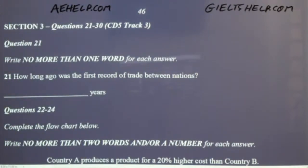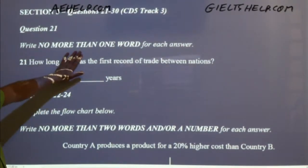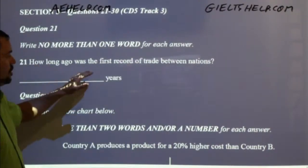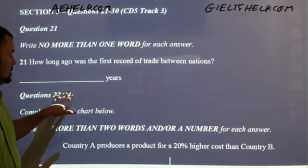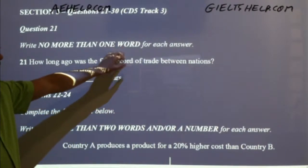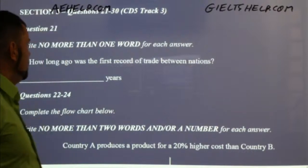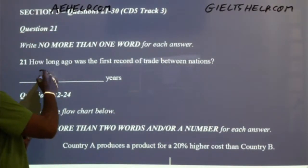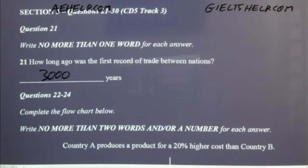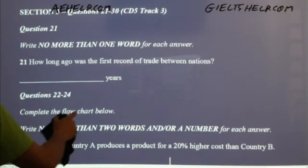Tip number one: always pay attention to the instructions — one word, two word, or three words. Here it says write no more than one word for each answer. So how long ago was the first recorded record of trade between nations? All you need here is one number, because you have the word 'years' there. One number will suffice. And I see a lot of you are saying that number is 3,000. Dr. Young says the first record of trade is 3,000 years ago — between the Egyptians and Arabs. All you need here is the number. Don't write 3,000 out in full — just write the number. It's fine, even though it says 'word' there, they'll take the number.